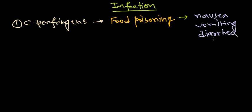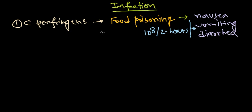These are similar symptoms to enterobacter or enteric E. coli infections. For the onset of food poisoning by Clostridium perfringens, it requires a high dose — almost 10 to the power of 8 organisms — within two to three hours. Only if this occurs can they cause these enteric diseases.